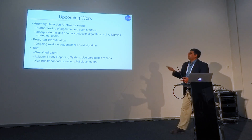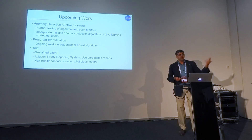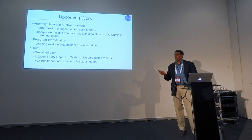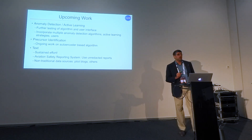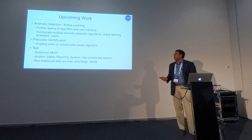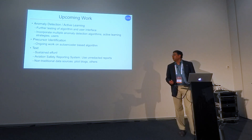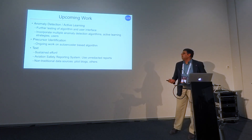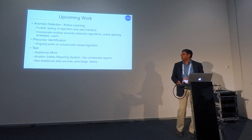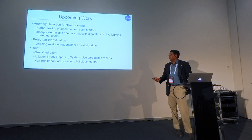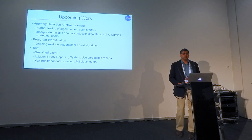We have a lot of upcoming work. Of course, there's more testing to do and room for improvement. We'd like to incorporate multiple anomaly detection algorithms and have tested quite a few active learning strategies. We've only had one domain expert provide labels and want multiple expert labels. For precursor identification, we have ongoing work on an autoencoder-based algorithm. As for text, we need some kind of sustained effort — it's been hit or miss based on funding. At NASA, we have an aviation safety reporting system where we've used redacted reports so far, with the possibility of using unredacted reports. And we mentioned the desire to use non-traditional data sources.